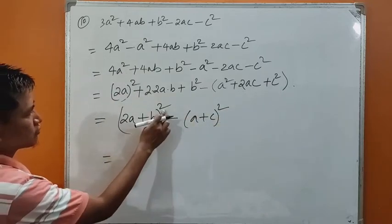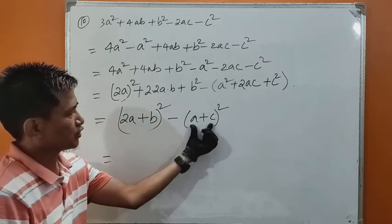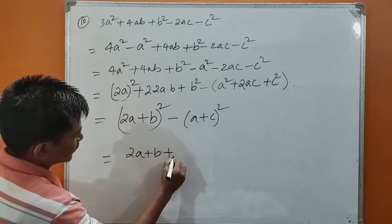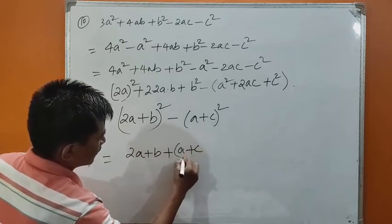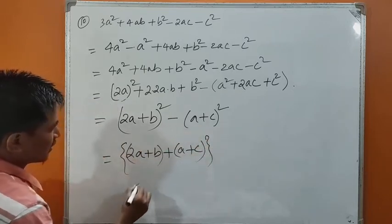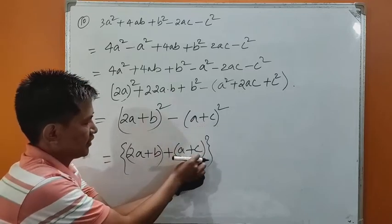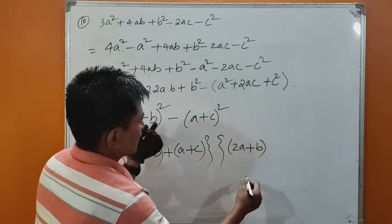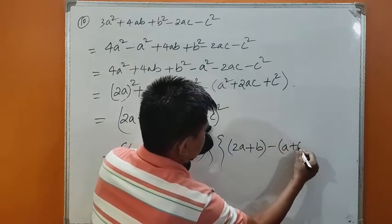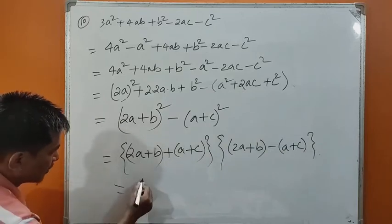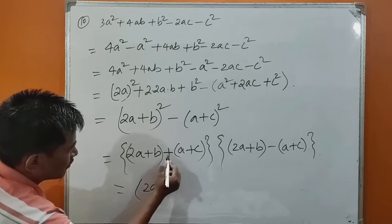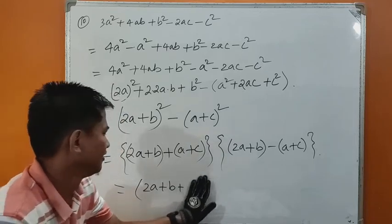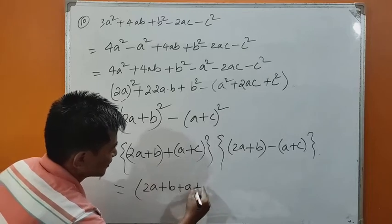Now we have 2a plus b whole squared minus a plus c whole squared. This is of the form a squared minus b squared, where 2a plus b is a and a plus c is b. So this equals a plus b times a minus b: that is 2a plus b plus a plus c, times 2a plus b minus a plus c.